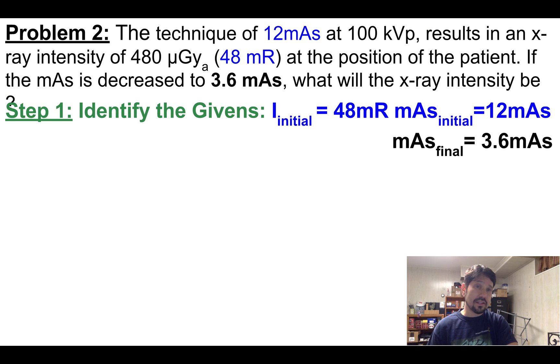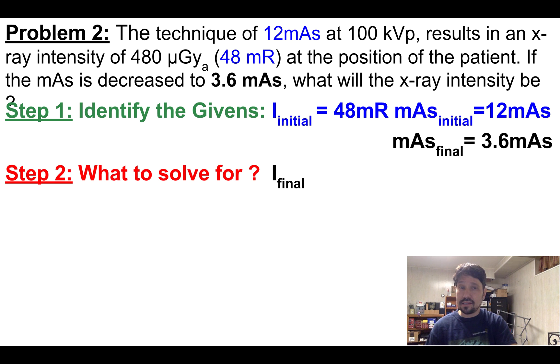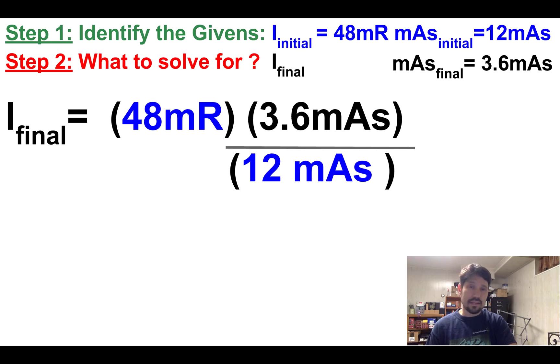All right, so what are my givens? I've got initial intensity of 48 mR, an initial mAs of 12, and I've been given a final mAs of 3.6. I'm going to solve for that final intensity. So let's plug it into the equation. My initial intensity is 48 times my new mAs of 3.6 over my old mAs of 12, lets me get to 14.4 mR.